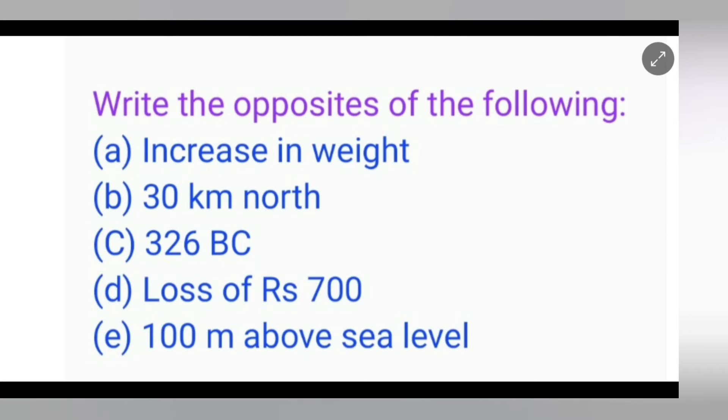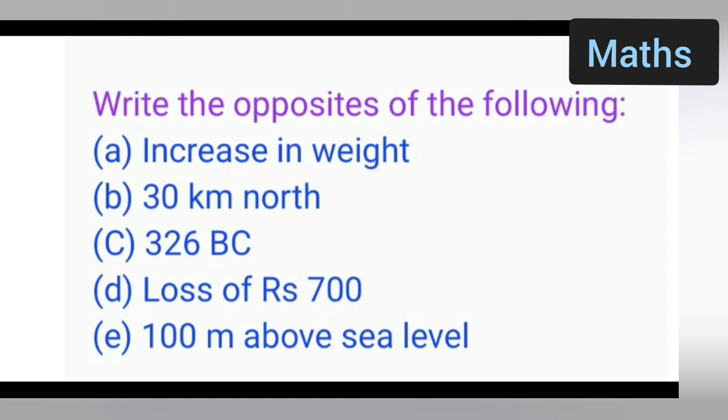Welcome to today's maths class. Today's question is write the opposites of the following. First one is increase in weight, second one will be 30 km north, third is 326 BC, fourth one is loss of Rs. 700, and the fifth one is 100 meter above sea level.